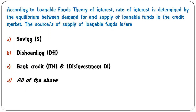According to the loanable funds theory, the rate of interest is determined by the equilibrium between demand for and supply of loanable funds in the credit market. The sources of supply of loanable funds are savings, dishoarding, bank credit, and disinvestment — all of the above. The supply of loanable funds = S + DH + BM + DI. D is the correct answer.